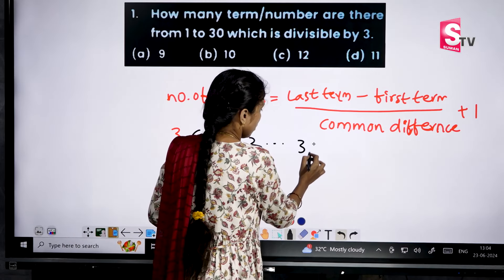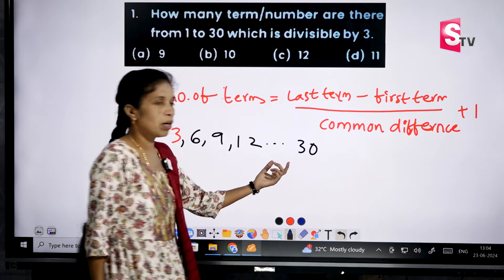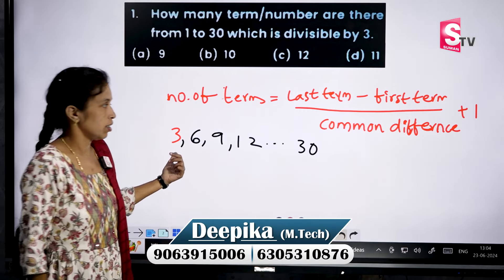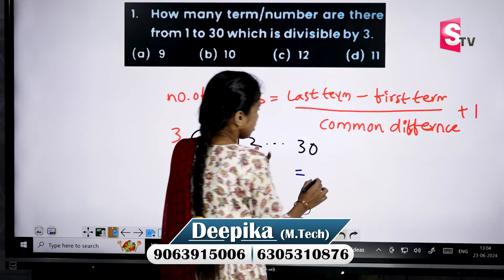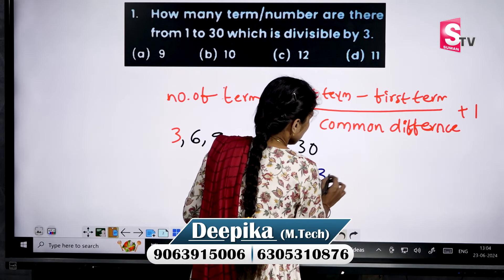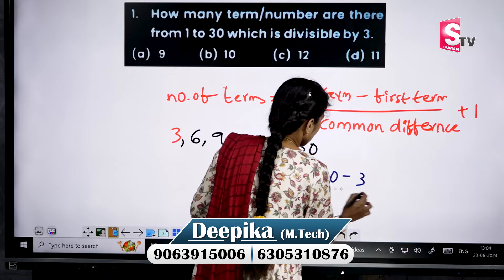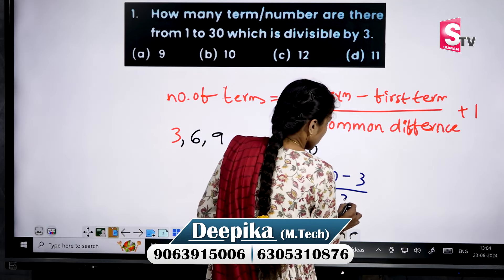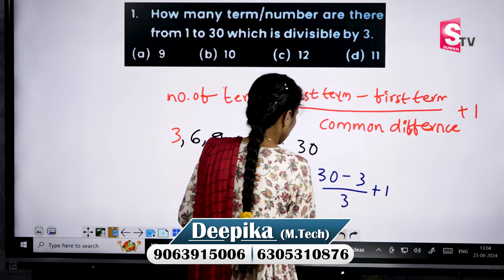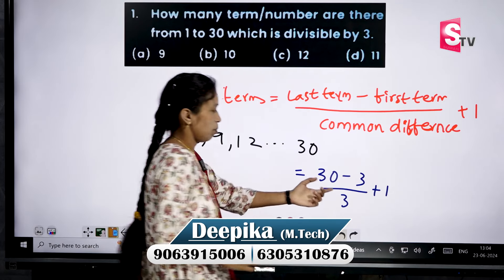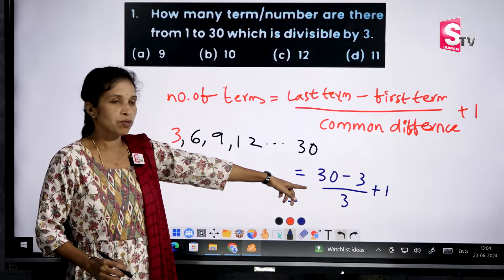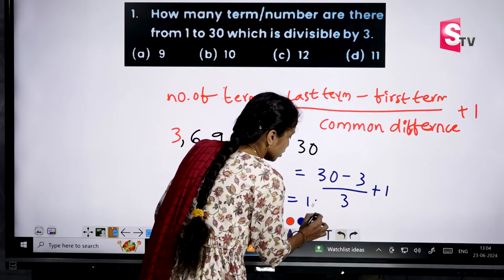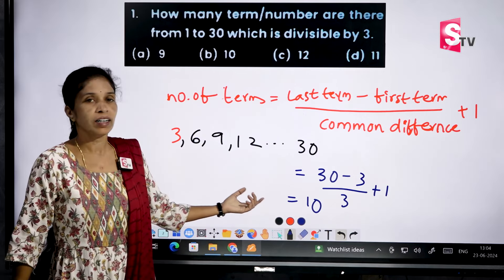For the three multiples, last term is 30 and first term is 3. Substituting in the formula: 30 minus 3 divided by 3, plus 1. That is 27 by 3, which equals 9, and 9 plus 1 equals 10. So we are getting 10 terms.